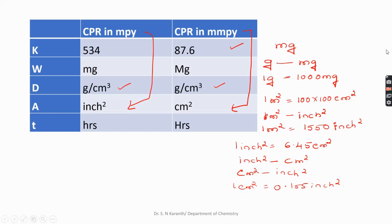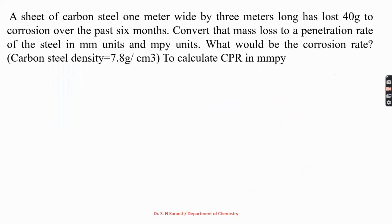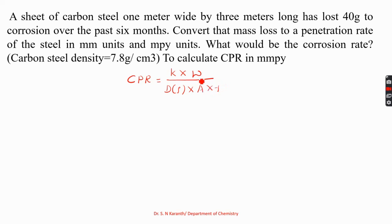Now let us look at numerical problems on corrosion penetration rate. CPR is the speed at which any metal or alloy deteriorates in a specific corrosion environment through chemical or electrochemical reaction. The CPR formula depends on constant K, weight loss W, density ρ, surface area A, and time of exposure T.